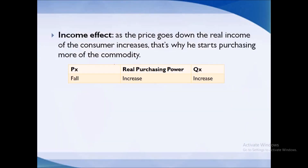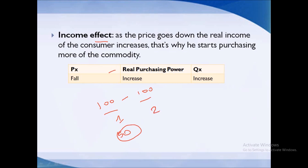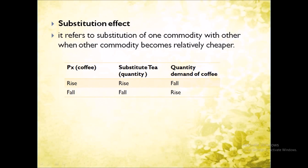Now coming to the second reason, which is the Income Effect. Suppose a commodity's price is high and your income is also limited — you can only afford one unit. But if the price of that commodity falls, say from 100 to 50, you can now purchase two units. So the basic idea of the income effect is: if the price of a commodity falls, your purchasing power increases, and as per the Law of Demand, Qx increases.